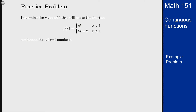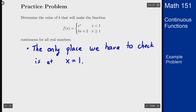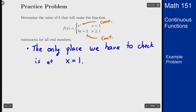In order to do this, we realize that the only place we have to check is at x equals 1. Because the function e to the x for x less than 1 is continuous, and the function bx plus 2 for x greater than or equal to 1 — that linear function — is also continuous. The only problematic point is at x equals 1, so if we check at this point and make the function continuous there, it is then continuous for all real numbers.